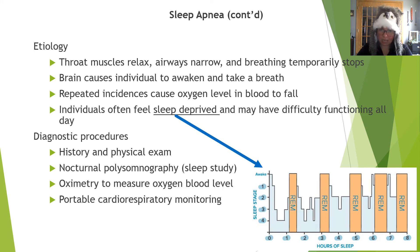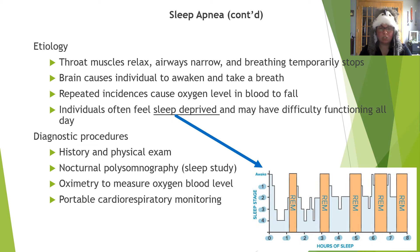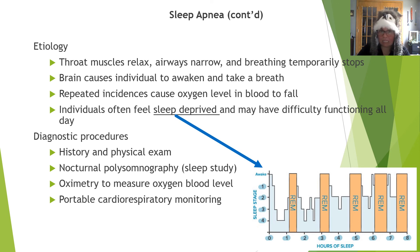Sleep apnea is diagnosed beginning with a patient's history and physical exam, then a sleep study is ordered — nocturnal polysomnography — a test that measures brain waves while sleeping along with respirations and oximetry. The oximeter checks oxygen in the blood, that white clip on people's fingers in the hospital. Portable cardiorespiratory monitoring systems can complement the diagnosis, but a true sleep study is ideal.